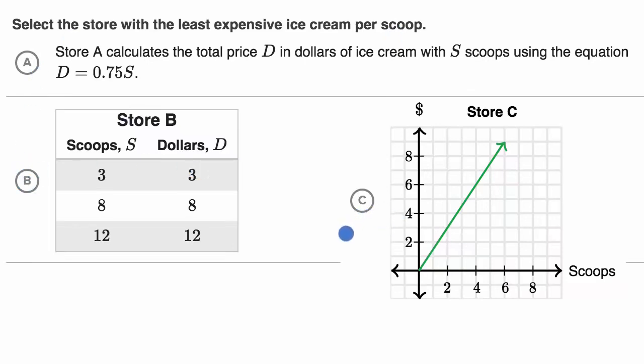Now let's go through these together. Choice A calculates the total price d in dollars of ice cream with s scoops using the equation d equals 0.75s. So whatever the number of scoops are, we're gonna multiply that times 75 cents or 75 hundredths of a dollar to get the price. And so based on the logic we just used in that last example, in store A it is 75 cents per scoop, so we know the price there.